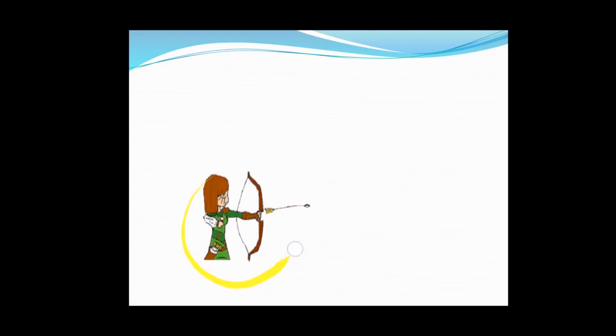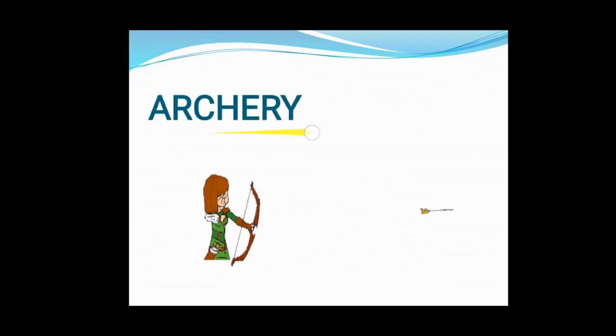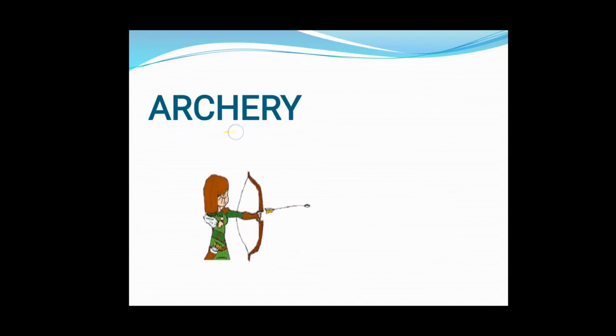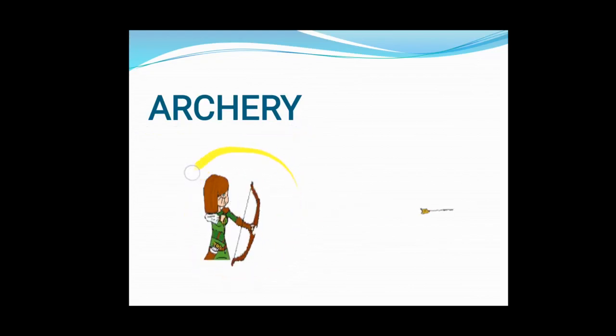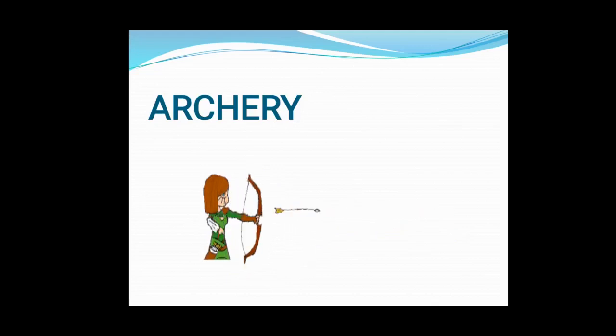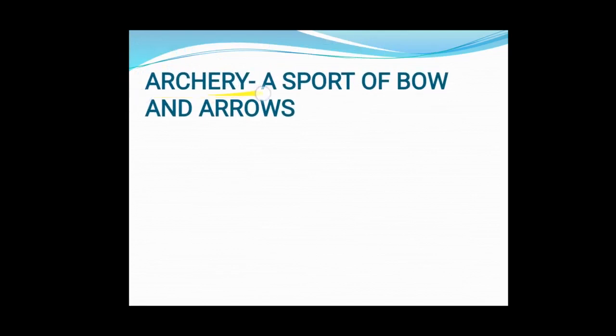Now let's look at the next new word. Try to identify this word. What is this person doing here with this bow and these arrows? The word is archery. A-R-C-H-E-R-Y. Repeat the spelling: A-R-C-H-E-R-Y. Archery. Archery is a game — a sport — which is played using bow and arrows.